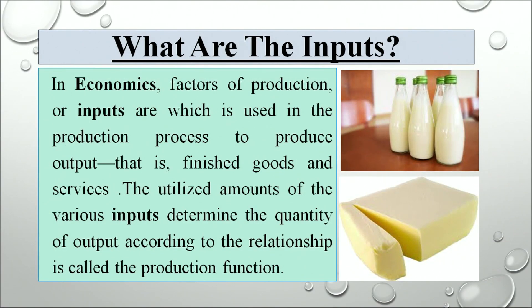Now we have discussed in the definition of production that when we use inputs to create output, it is necessary to understand the meaning of inputs. In economics, factors of production or inputs are what is used in the production process to produce output, that is finished goods and services. The utilized amounts of the various inputs determine the quantity of output — this relationship is called the production function. It is very simple: when we put some input in order to get some output, it is all about the production function.